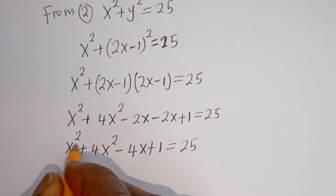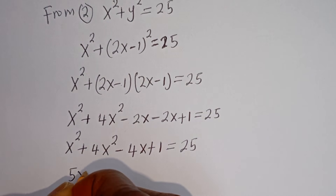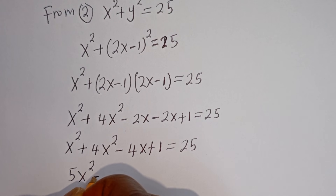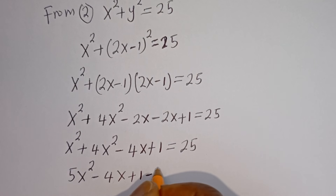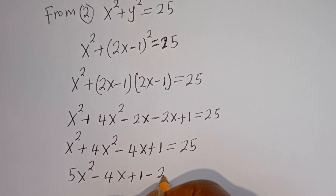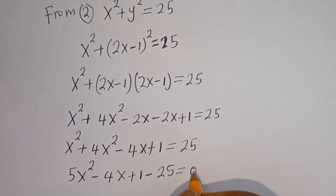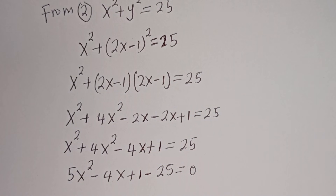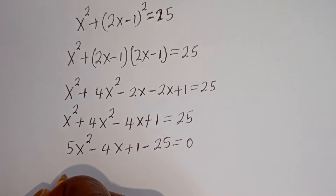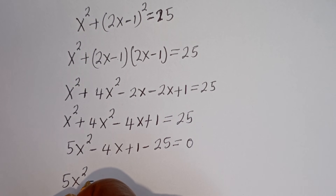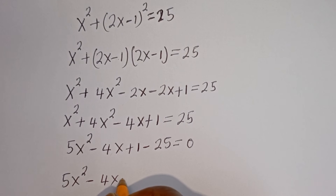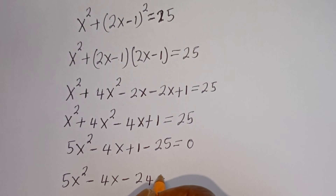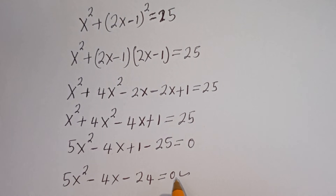Combining like terms: x squared plus 4x squared gives 5x squared, minus 4x plus 1 minus 25 is equal to 0. So we have 5x squared minus 4x minus 24 is equal to 0. This is a quadratic equation.